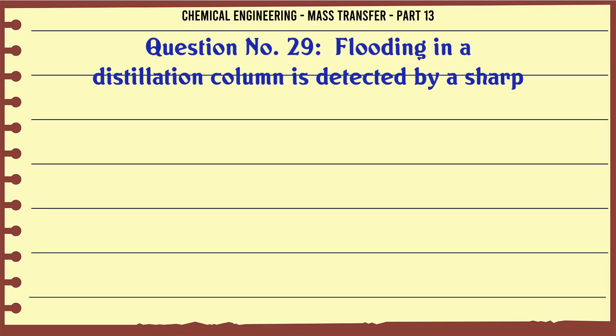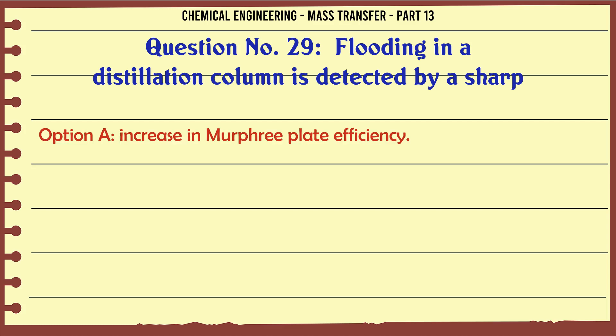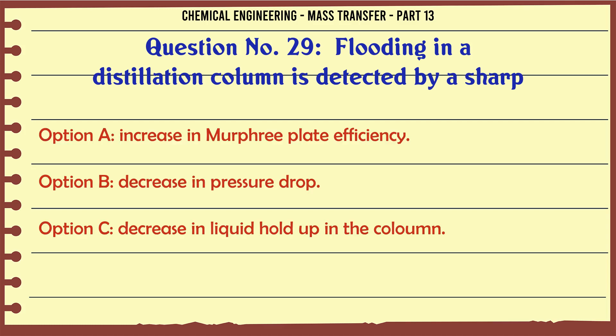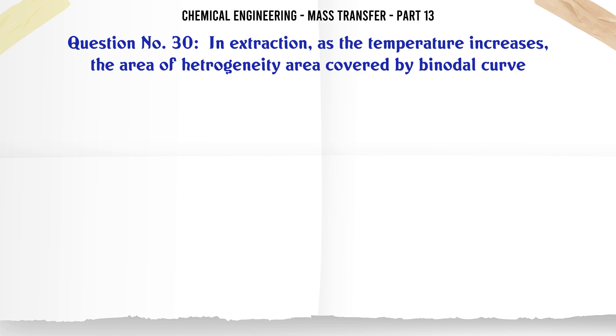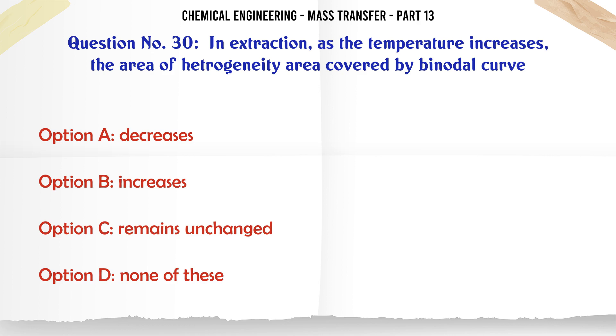Flooding in a distillation column is detected by a sharp: A. Increase in Murphree plate efficiency. B. Decrease in pressure drop. C. Decrease in liquid hold-up in the column. D. Increase in pressure drop. The correct answer is: Increase in pressure drop.